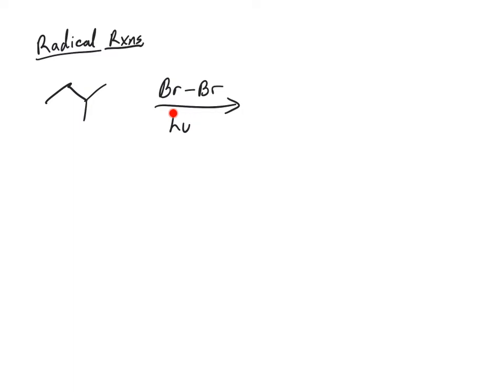The first step, we have some energy, in this case light. What that's going to do is break the weakest bond in the system. And so in this case, that's called an initiation. The initiation step is where radicals are actually formed. So now for the initiation step, we're going to have two Br dots.